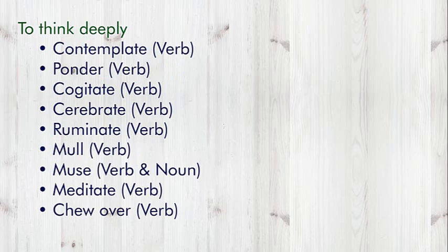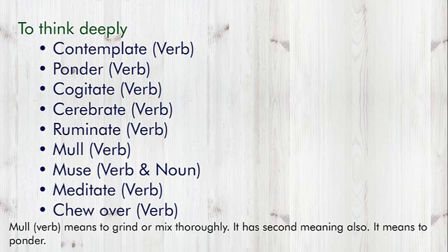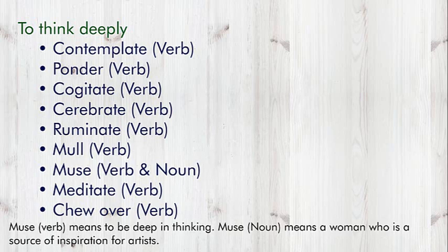To Think Deeply: Words are Contemplate (Verb), Ponder (Verb), Cogitate (Verb), Cerebrate (Verb), Ruminate (Verb), Mull (Verb), Muse (Verb and Noun), Meditate (Verb), and Chew Over (Verb). For an animal, Ruminate means to bring up and chew again what has already been chewed and swallowed. Mull (Verb) means to grind or mix thoroughly; it has a second meaning — to ponder or to think deeply. Muse (Verb) means to be deep in thinking. Muse (Noun) means a woman who is a source of inspiration for an artist.